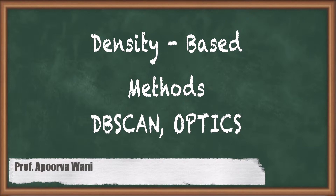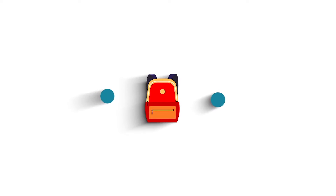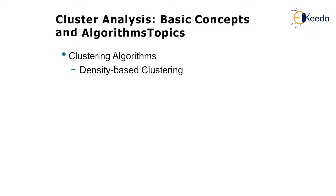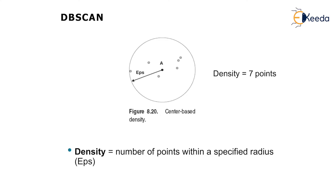In this video we are going to see a very important clustering algorithm — density-based clustering. In DBSCAN, we first calculate the centroid value, and using the centroid density we calculate the Euclidean distance of each centroid for each data set. Density is defined as the number of points within a specified radius.